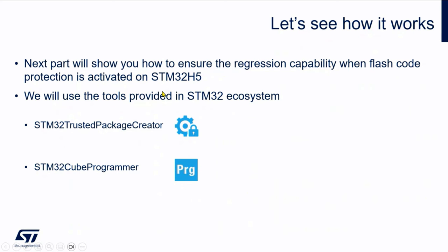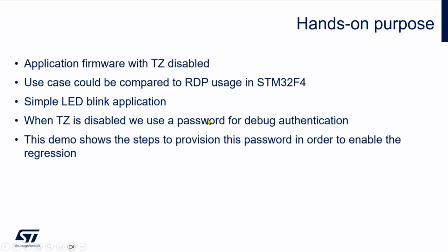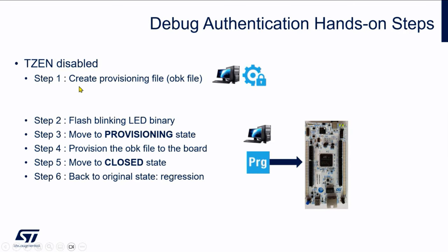Let's see how it works. I will show you this regression capability. We will use the Trusted Package Creator, which is provided together with Kube Programmer in the same package when you download Kube Programmer. We will have an application firmware with TrustZone disabled. The different steps include creating the provisioning file called an OBK file — OBK stands for Option Byte Key — which will be stored in a specific area called a secure storage, also called OBK.